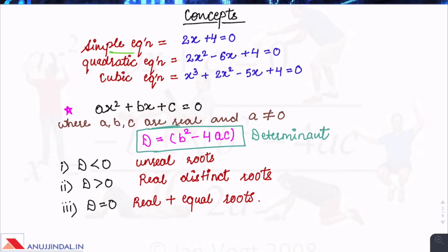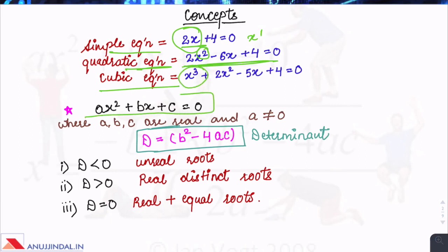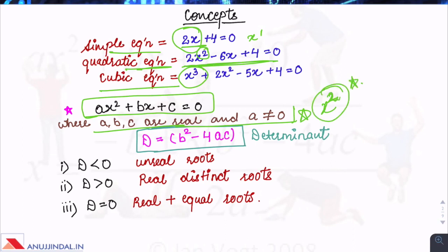In a simple equation, variables are raised to x to the power 1. In a quadratic equation, variables are raised to x to the power 2. These are quadratic equations, and in cubic equations, variables are raised to the power 3. A quadratic equation looks like ax² + bx + c = 0, where a, b, c are real and a is not equal to 0. It must have a term in x to the power 2 — only then is it a quadratic equation.